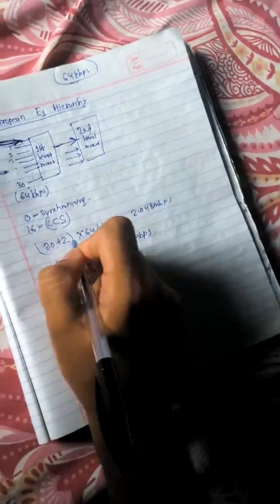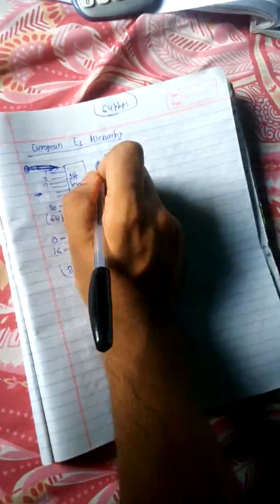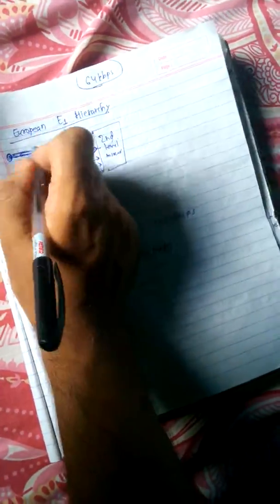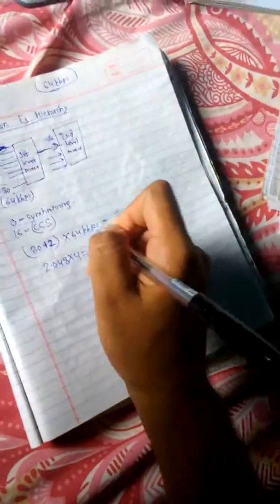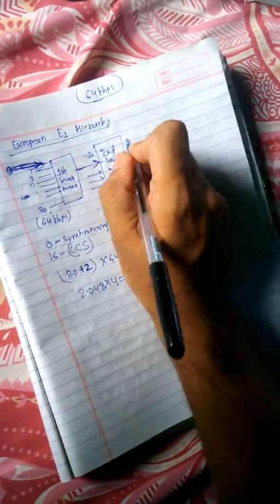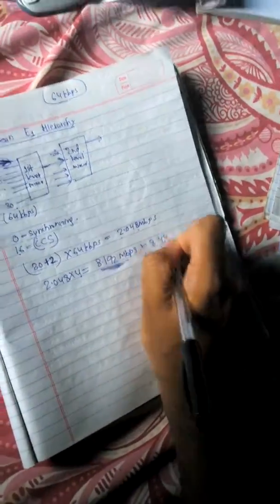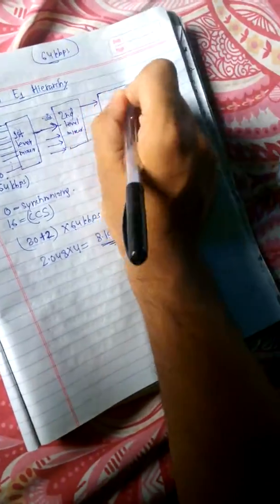Just as at the first level we added 2 channels for signaling purpose, here also there are some additional signaling channels not shown in the diagram. So instead of 8.192 Mbps, the actual output will be slightly more — 8.448 Mbps.